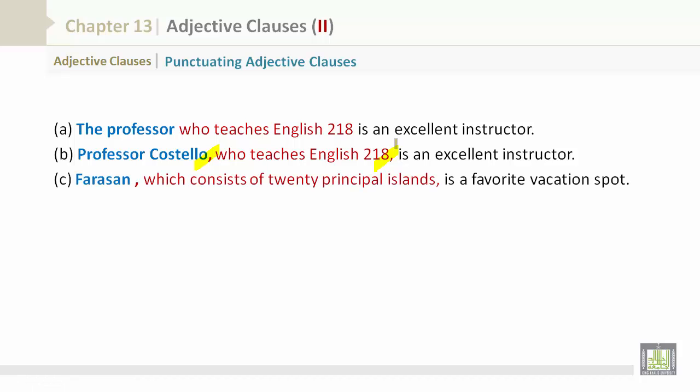Farisan, comma, which consists of 20 principal islands, comma, is a favorite vacation spot. So what you can understand is that Farisan is a favorite vacation spot, and it also consists of 20 principal islands.